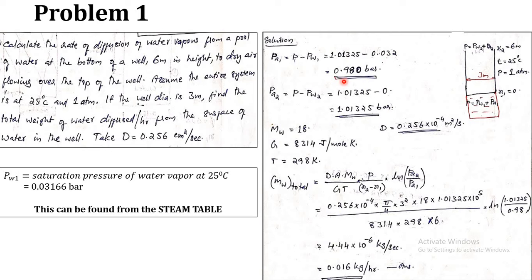Substituting all values: MW equals 18, DAB equals 0.256 × 10⁻⁴ m²/s, G equals 8314 J/(mol·K), T equals 298 K, and the cross-sectional area A equals pi/4 times (3)². Calculating gives the total mass diffusion rate of water as 0.016 kg/hour.